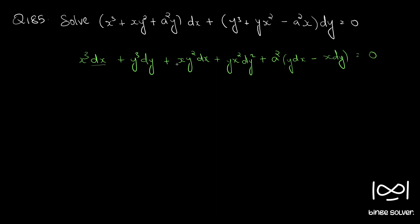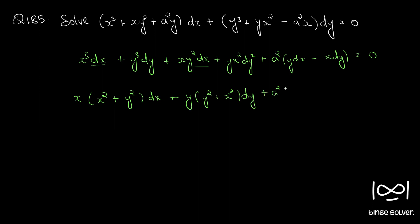These two terms can be grouped together. Taking x common we have x square plus y square dx. Taking x plus y common from the other part we have y square plus x square dy plus a square into y dx minus x dy equal to 0. So if we divide throughout by x square plus y square,